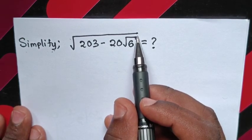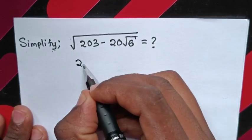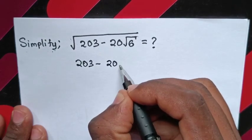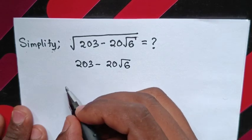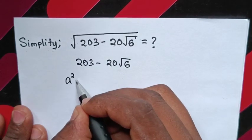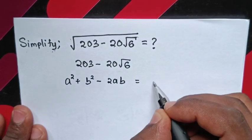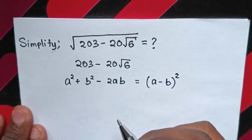From this expression under square root, which is 203 minus 20 square root of 6, we will apply the quadratic formula that a square plus b square minus 2ab is equal to a minus b bracket square.